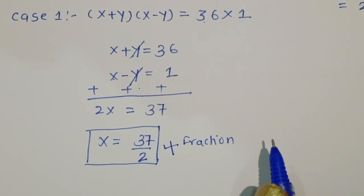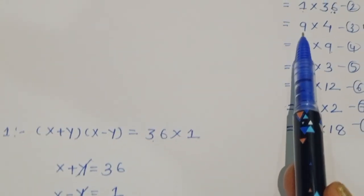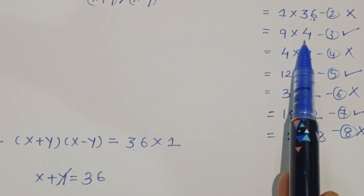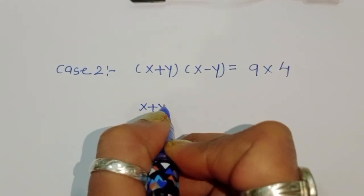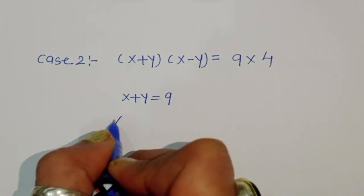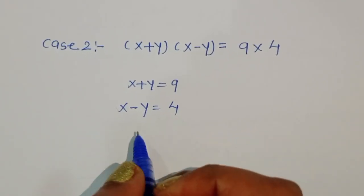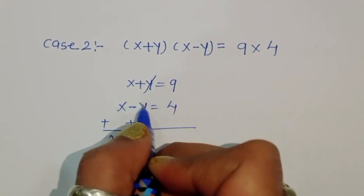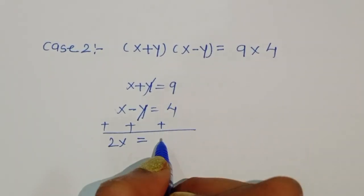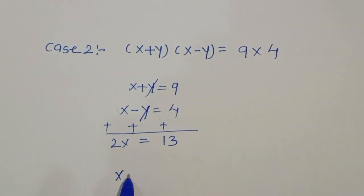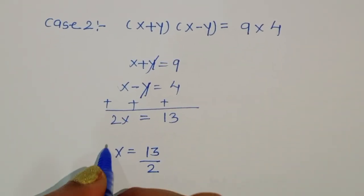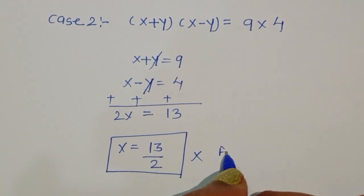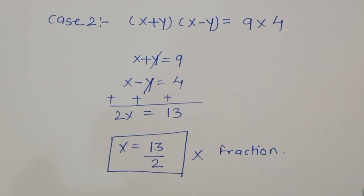Case 2: (x + y)(x - y) = 9×4. So x + y = 9 and x - y = 4. Adding these two equations: 2x = 13, so x = 13/2. This is also a fraction, not a natural number, so this case is rejected.